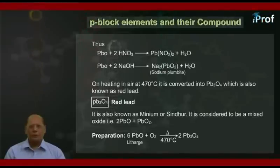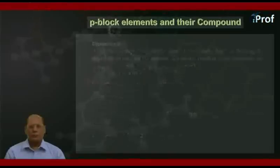6PbO, that is litharge, plus O2 on heating in air at 470 degrees Celsius, we get 2Pb3O4. Properties: